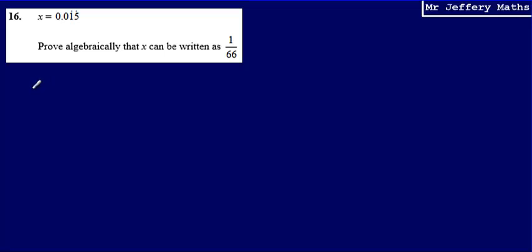This is question 16 from a series of videos taking a look at the Edexcel practice papers. Here we're told that x is equal to 0.015 recurring, and what we're asked to do is prove algebraically that x can be written as 1 over 66.